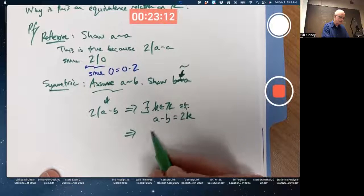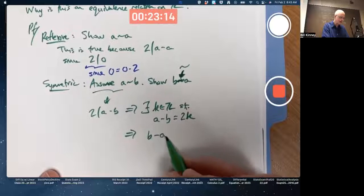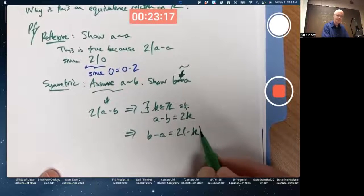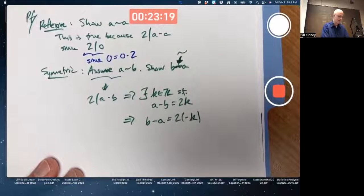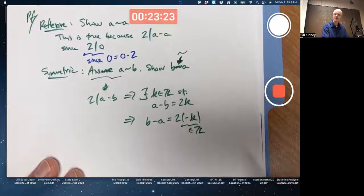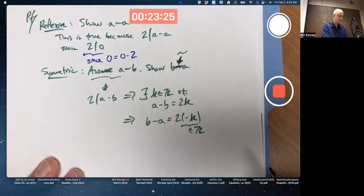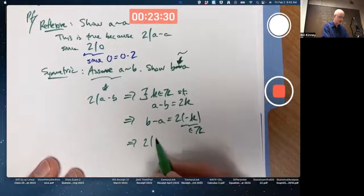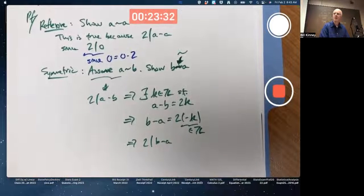I want to show B minus A is even. Well, just take this equation and multiply both sides by negative one and write it like this. K is an integer, so negative K is an integer. It's the additive inverse of K. This means two divides B minus A. That's the symmetric property.